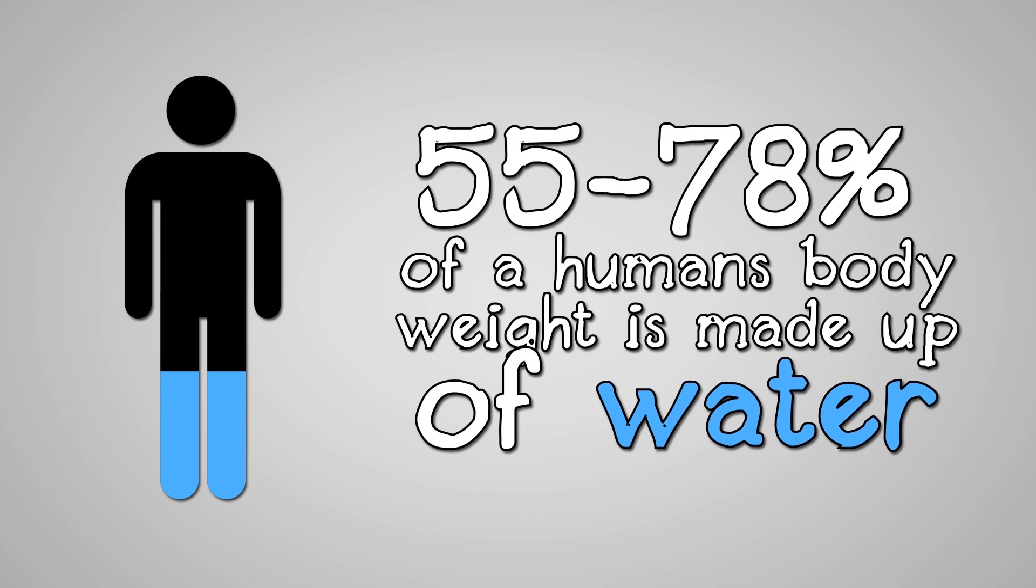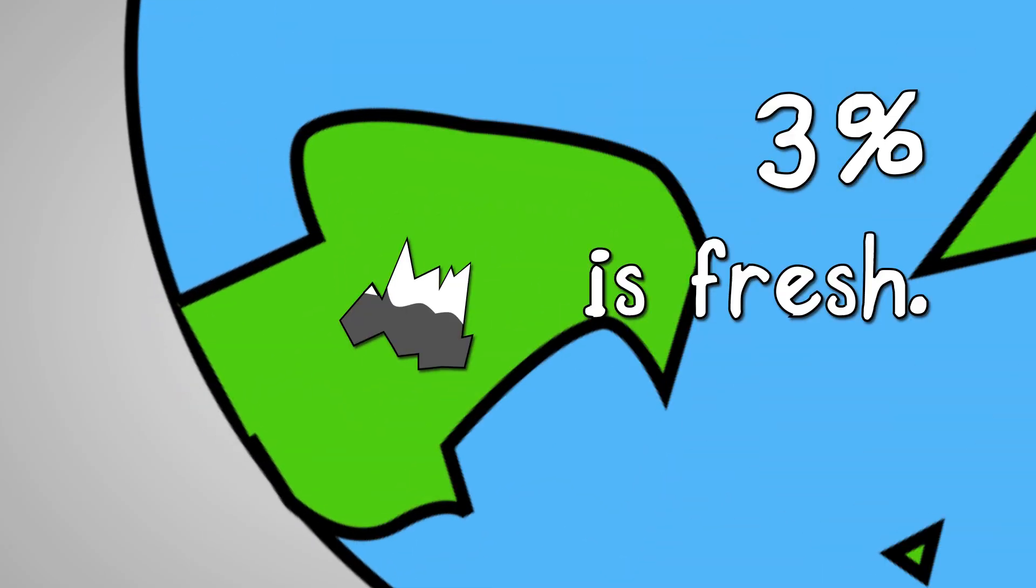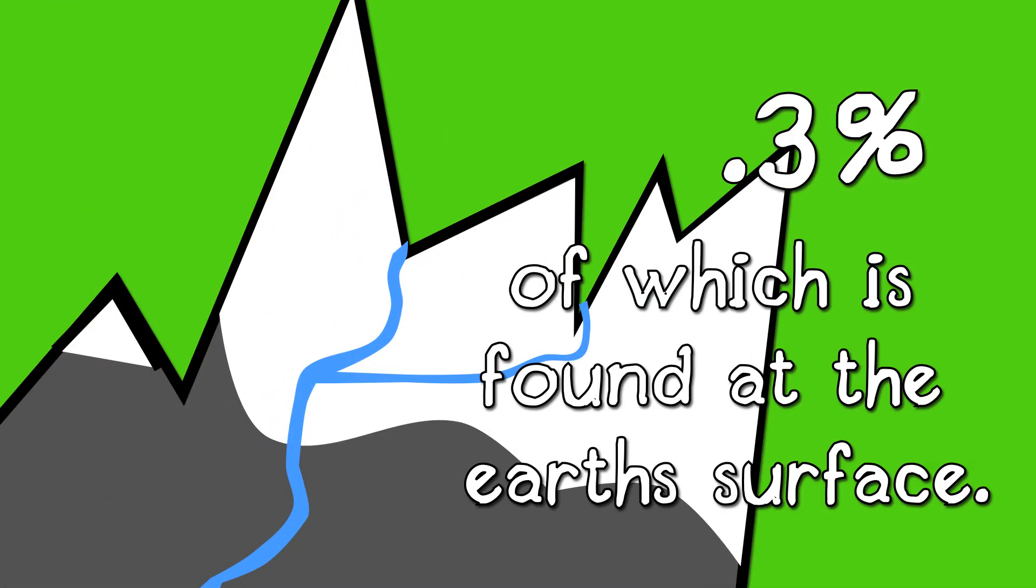55 to 78% of a human's body weight is made up of water. 97% of water is salt water. 3% is fresh water, 0.3% of which is found at the Earth's surface.